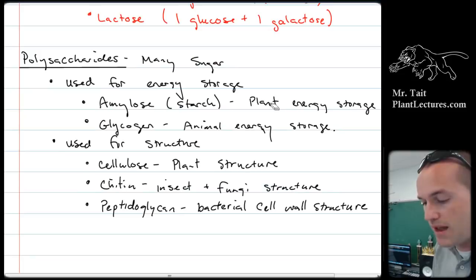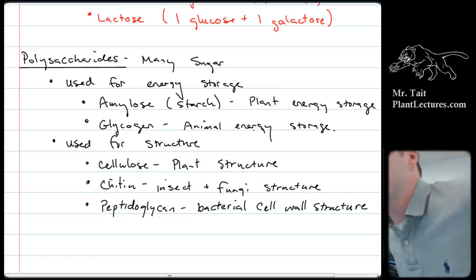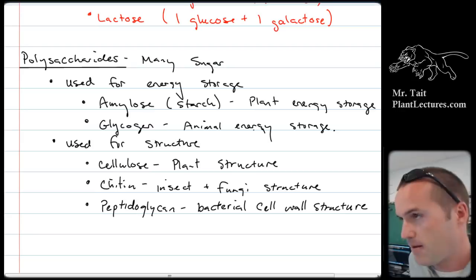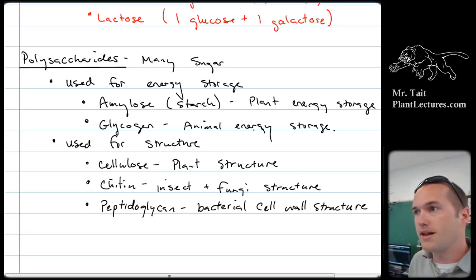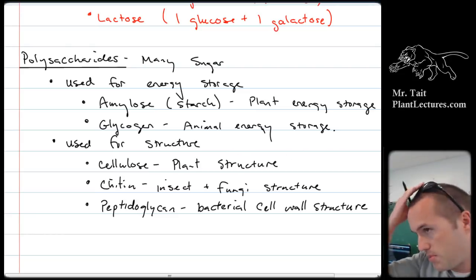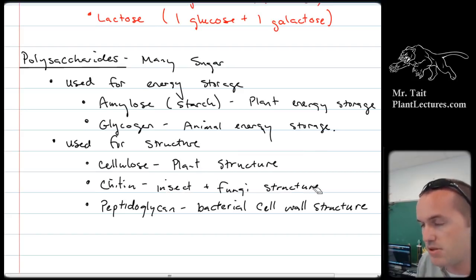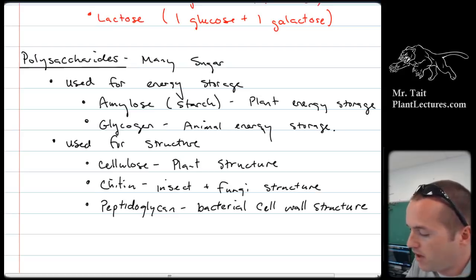The important polysaccharides we looked at were amylose, which is starch, which is how plants store energy, and glycogen, which is how animals store energy. We know that glycogen is stored in the liver, and insulin is going to trigger your body to produce glycogen whenever you have high blood sugar. Cellulose is a structural molecule in plants. Chitin is the structural molecule for the exoskeleton of insects and also for the cell wall of fungi. And peptidoglycan is found in the cell walls of bacteria and prevents them from bursting from water pressure.